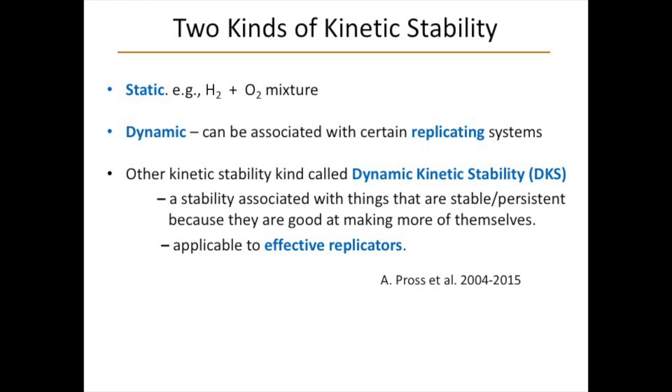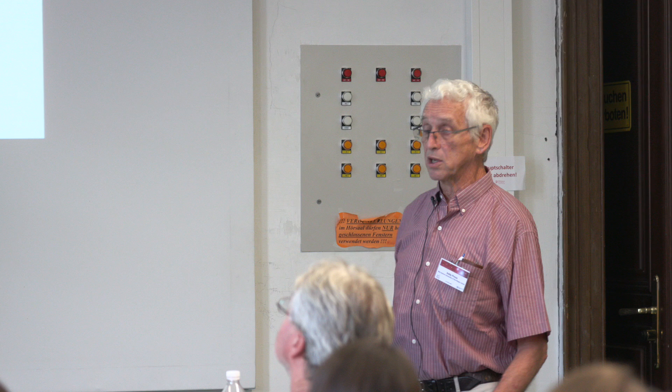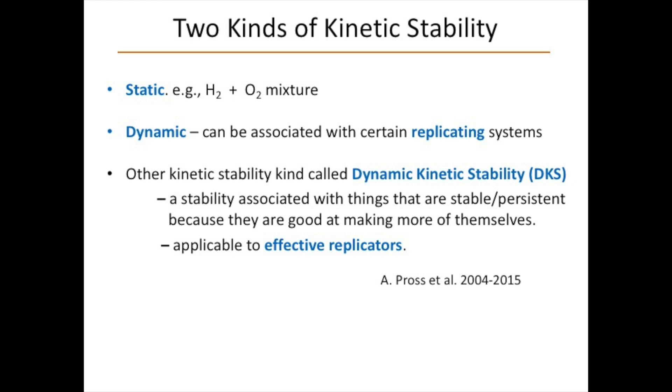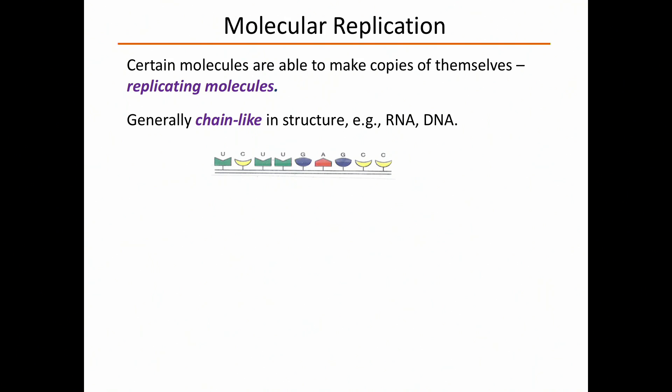The whole story starts with replication. There are certain molecules able to make copies of themselves — we call these replicating molecules. Examples are RNA and DNA — long sequential molecules with building blocks. If you take RNA and mix it with its activated building blocks, you end up with lots of copies of RNA. The mechanism is quite simple: the initial RNA molecule acts as a template to which the building blocks fit — you may know this from how DNA replicates.